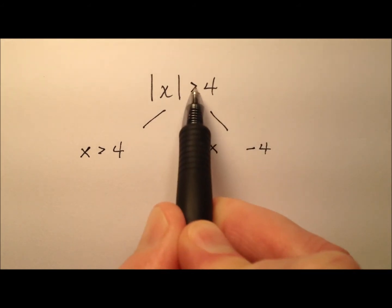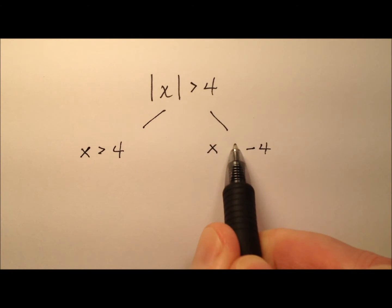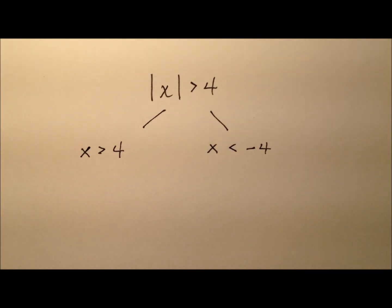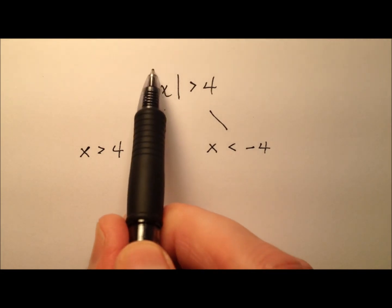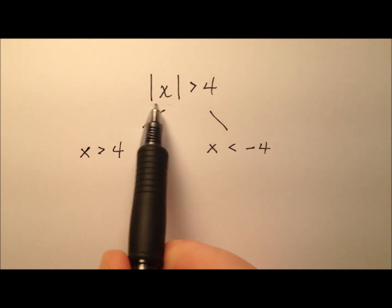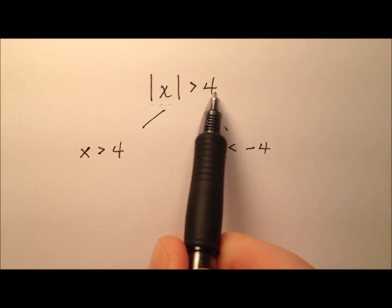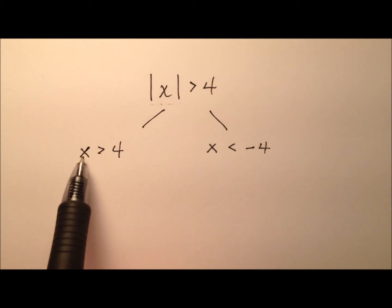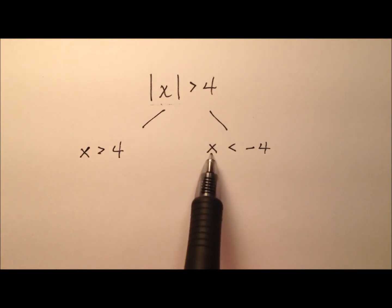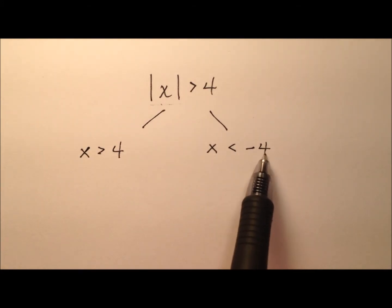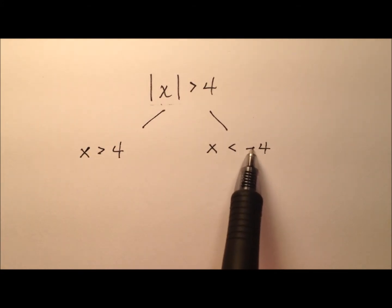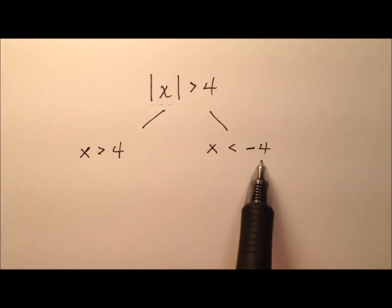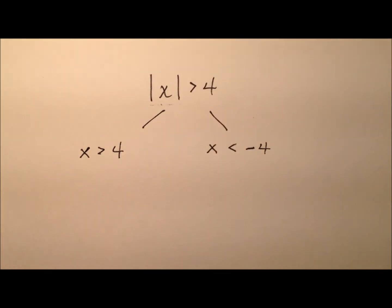Except when we do the negative side, we must flip the sign of the inequality. So let's recap what just happened. The absolute value expression was isolated on one side of the inequality all by itself, and it was greater than the number 4. So we broke it into two separate inequalities: x is greater than 4, and x is less than negative 4. Because we do the negative side, we must flip the sign of the inequality.